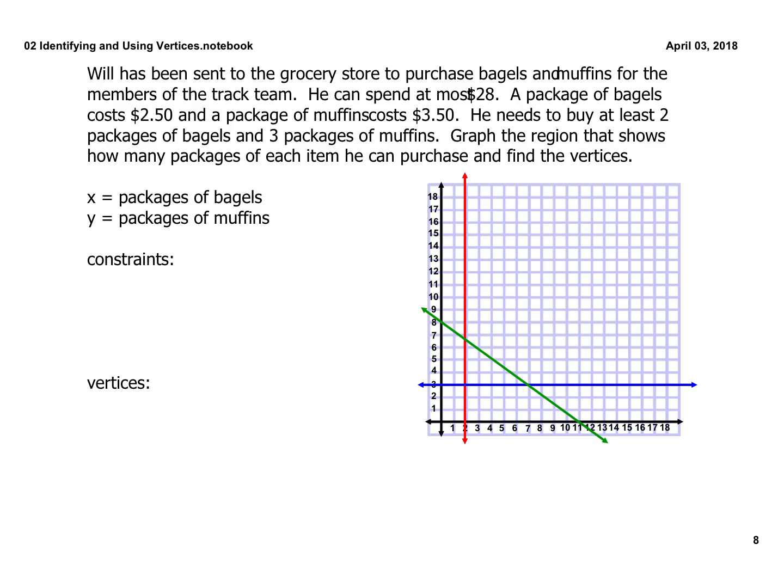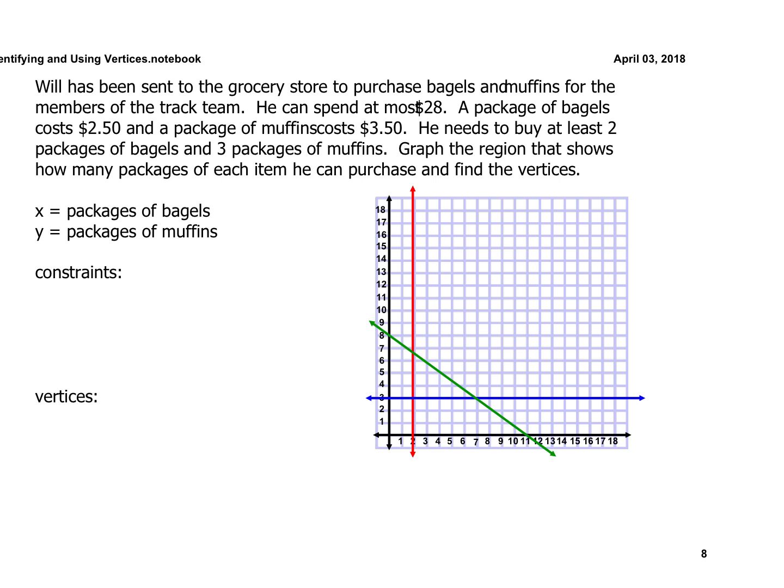Here is a typical question from your next test. Will has been sent to the grocery store — we're going to write equations for bagels and muffins. We have to decide right away: x is bagels, y is muffins — the problem tells us that. He can spend at most $28, which sounds like less than or equal to $28. We need to include how much each item costs.